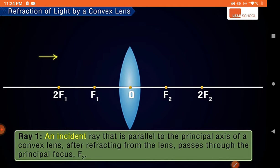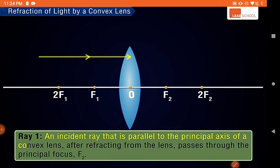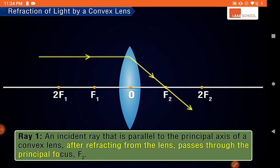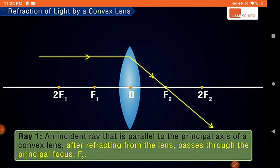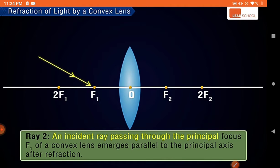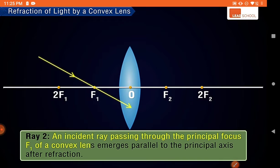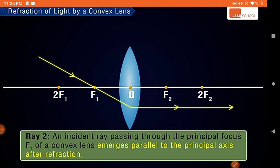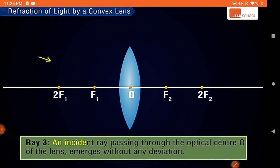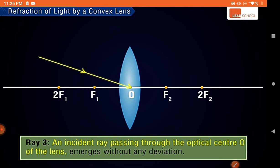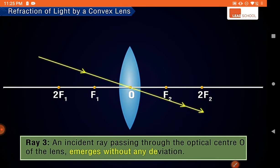The first incident ray is parallel to the principal axis; after refracting, it passes through the principal focus F2 on the other side of the lens. The second ray passes through the principal focus F1 and emerges parallel to the principal axis after refraction. The third ray passes through the optical center O and emerges without any deviation.